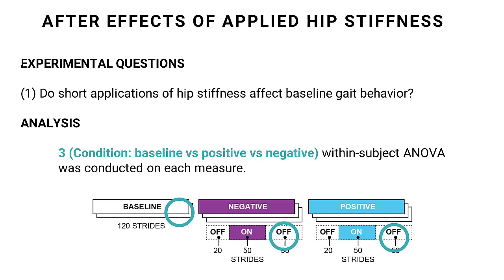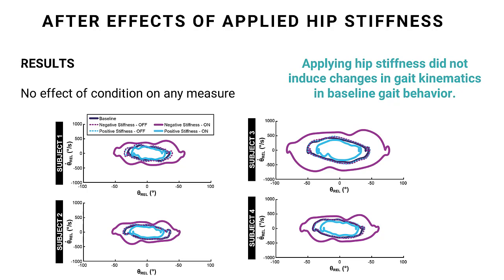Next, we asked: do short applications of hip stiffness affect baseline gait behavior? To do this, we compared gait behavior when the robot was off in three conditions: at the end of the very last baseline trial (last 50 strides), compared to the last 50 strides when the robot was off in the last trial of the negative stiffness condition, and the same for the positive stiffness condition. We compared each dependent measure across these three conditions with a one-way within-subjects ANOVA to look for any after effects of applied hip stiffness. This ANOVA revealed no effect of condition on any dependent measure—in other words, there are no after effects of applying hip stiffness.